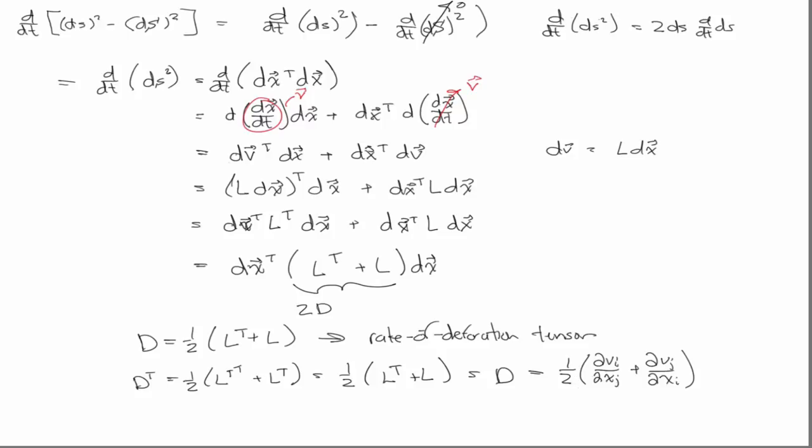And, if we use that same argument that we made, for small strains, for small displacements, rather, where we have x is x plus u, for small displacements, x is approximately big X. And so, in that case, this would be the strain rate. So, it's clear this is a rate. V is d/dt of x. So, this is a rate, a strain rate, d/dv xi. So, in the small displacement limit, there's no difference between little x and big X.